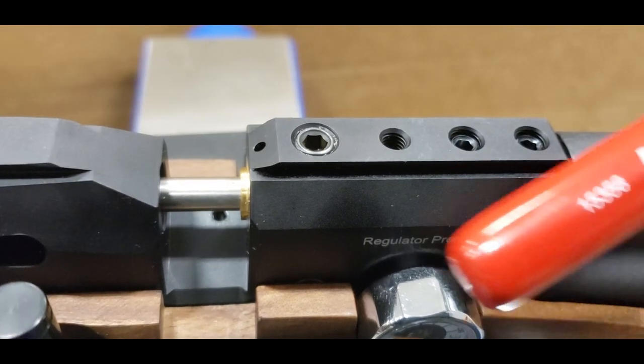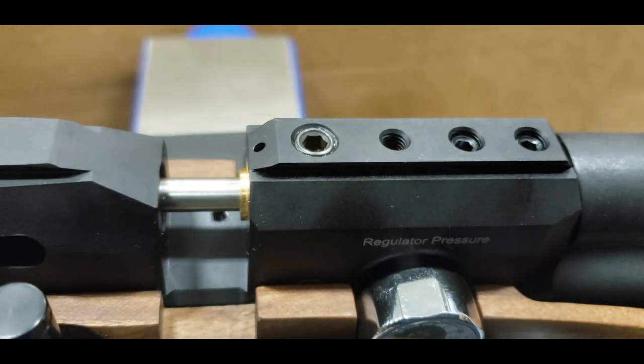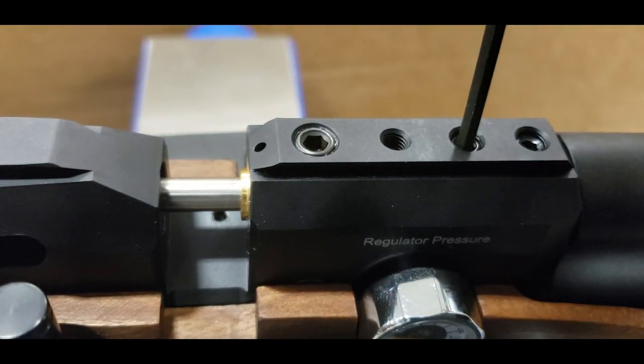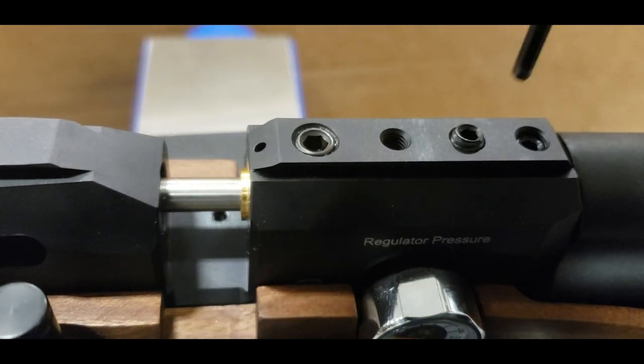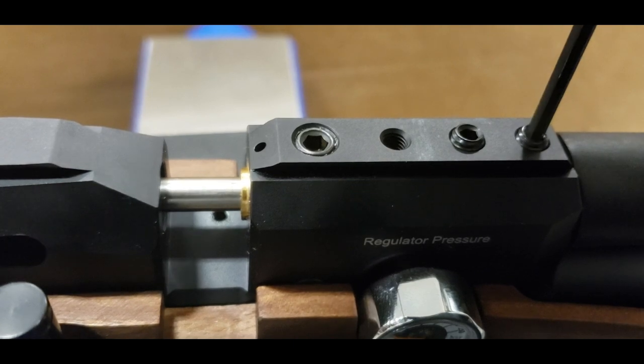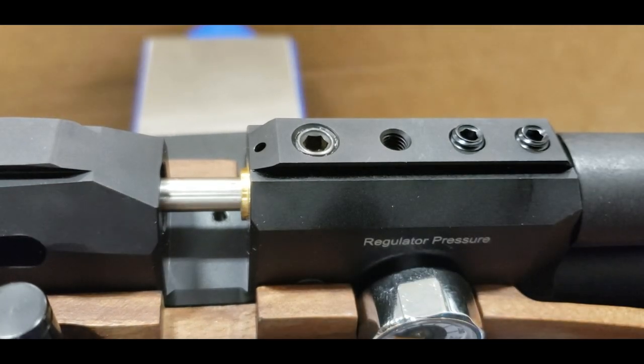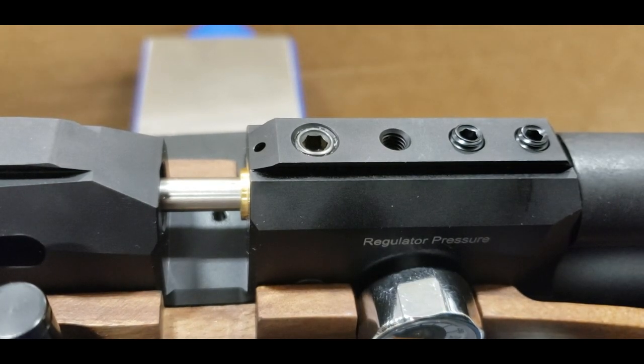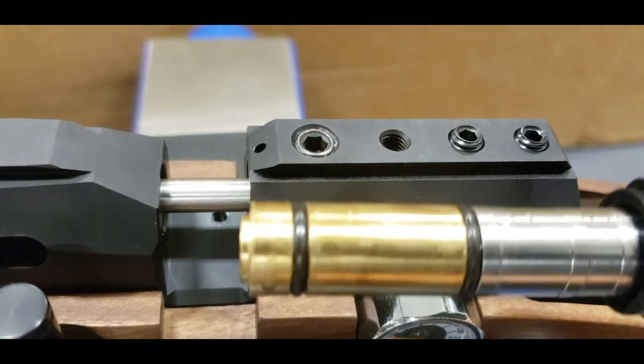The second two screws right here are three millimeter Allens. You basically just loosen up here and there, and the barrel will slide right on out just as so.